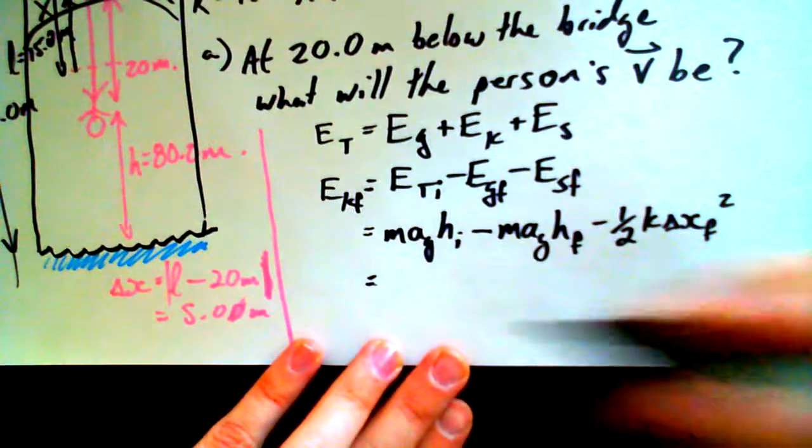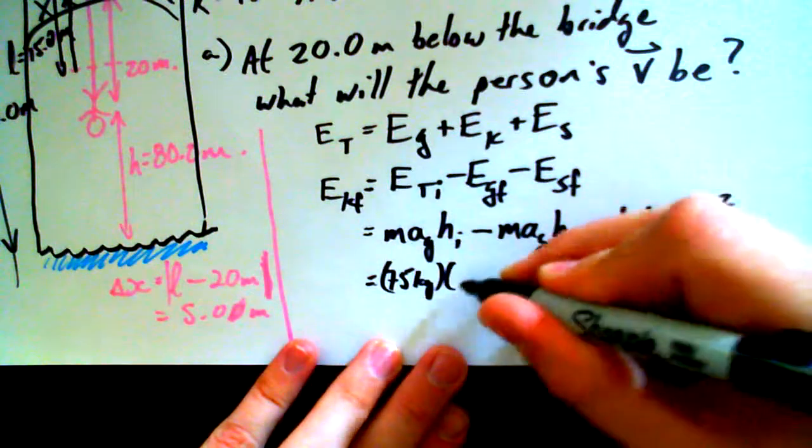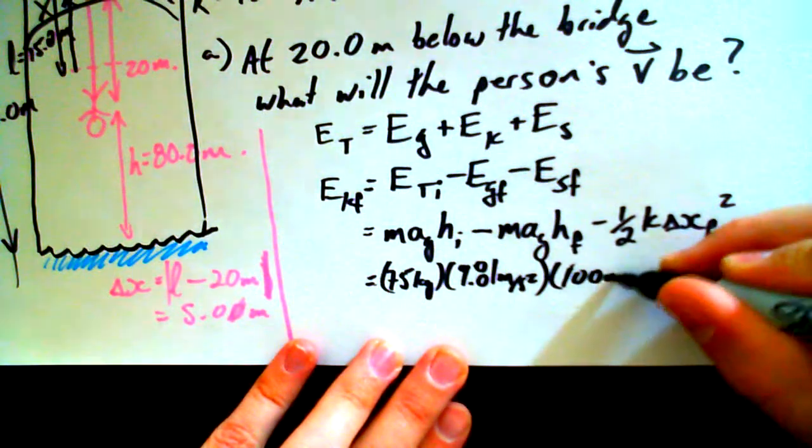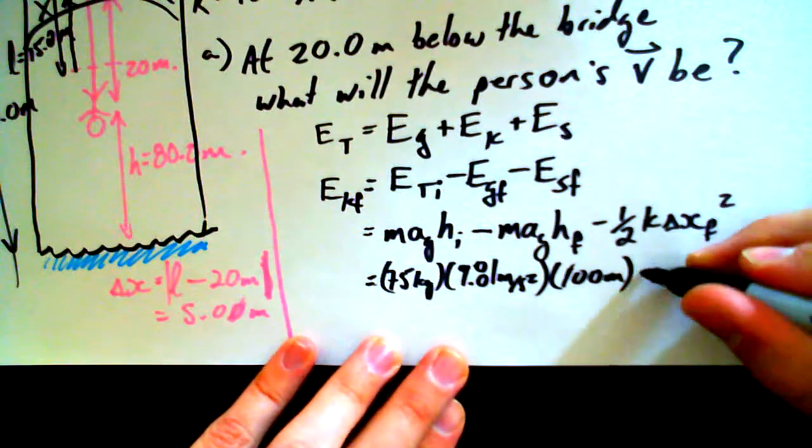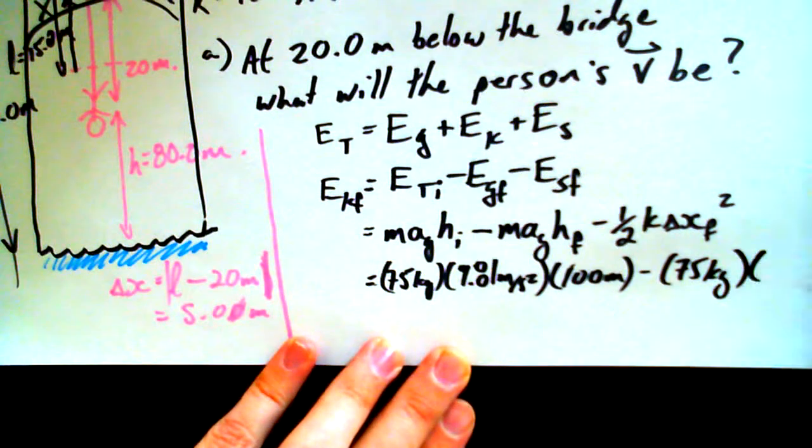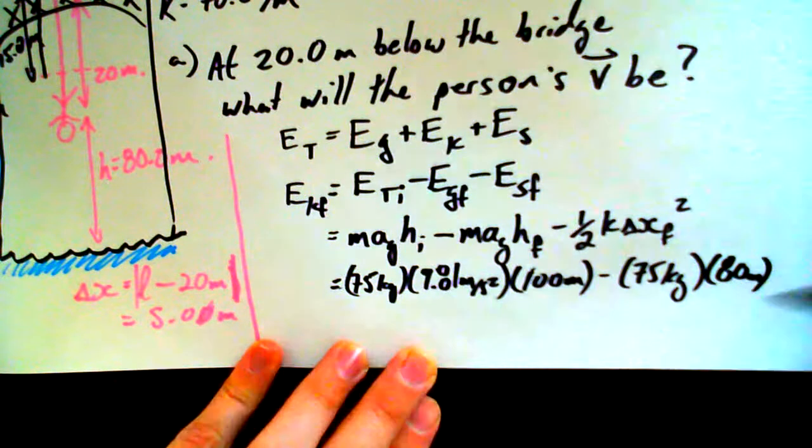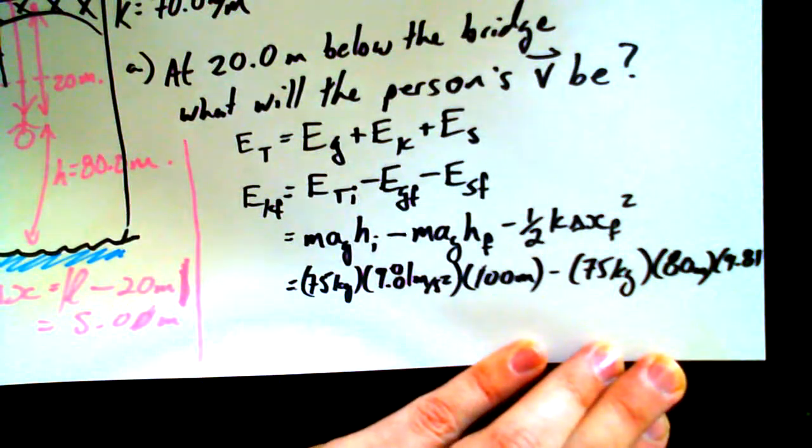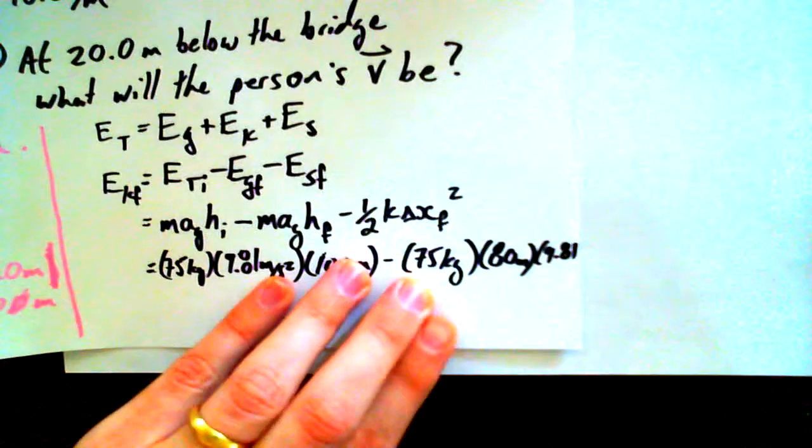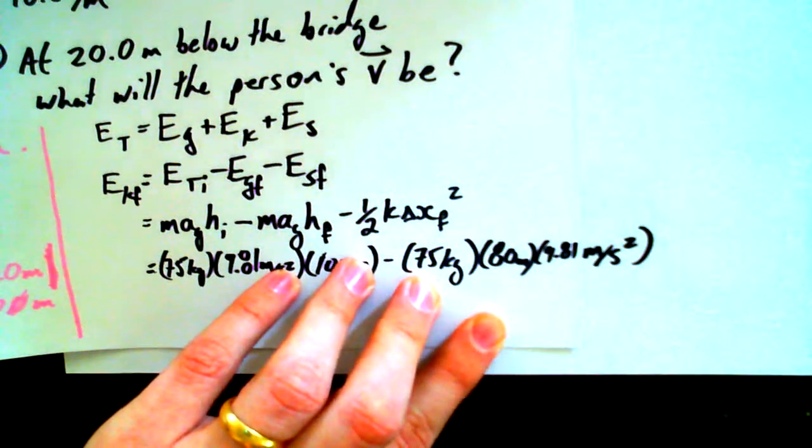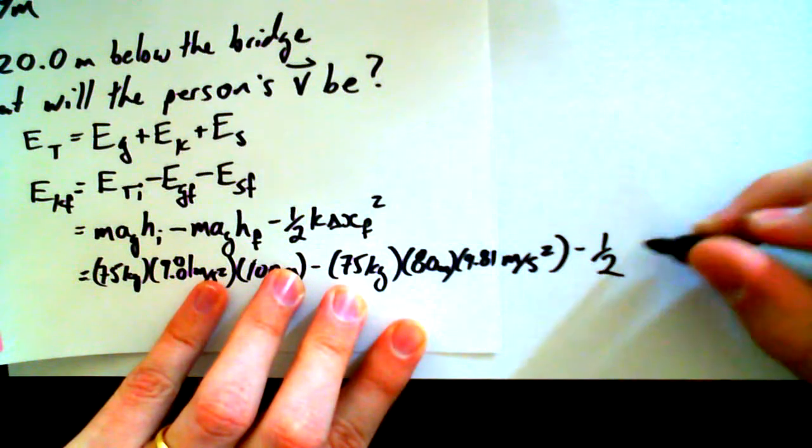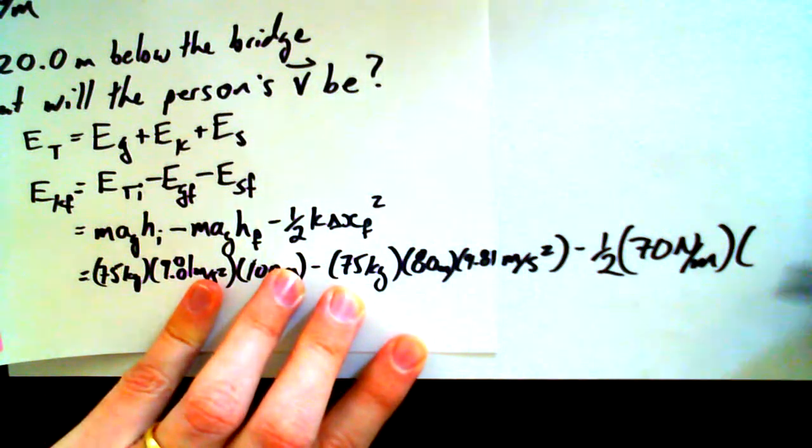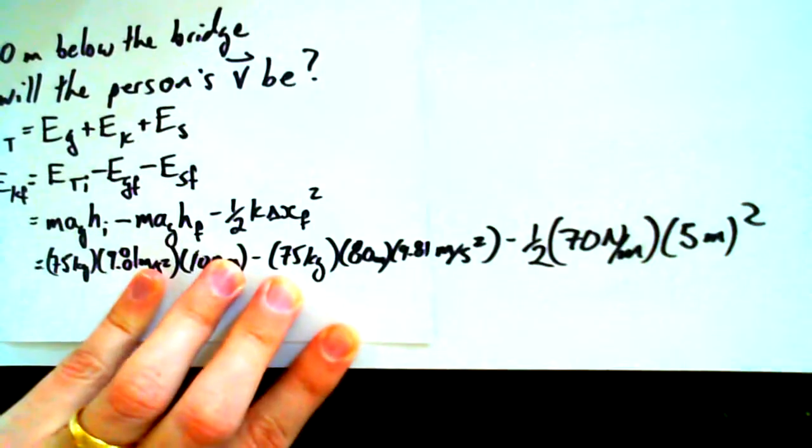Now, I can start subbing in my values. I've got a mass of 75 kilograms. Acceleration due to gravity is 9.81 meters per second squared. Original height was 100 meters. And people that want to help me with the calculations, you can get your calculators out at this point. We already said that the new height is 80 meters. Oops, I forgot to write 9.81. I'm going to run out of space here. Can't fit units in or speak in complete sentences. All right, there we go. More paper. 9.81 meters per second squared. Minus one half. And the K value in the situation was 70 newtons per meter times delta X, which was, we claimed it was 5 meters squared. Holy smokes. This is getting to be a long expression.